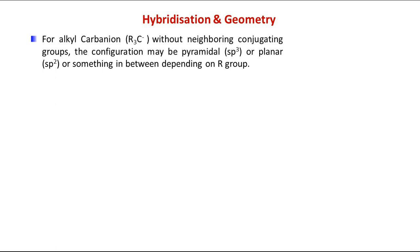First we will see simple carbanion, that is alkyl carbanion like R₃C⁻. In this case, these R groups are simply alkyl groups with no neighboring conjugating groups. For example, methyl — three methyl groups attached to C. In this case the configuration may be pyramidal, that is sp3. It is pyramidal and not tetrahedral because in one of the four positions there is the lone pair.